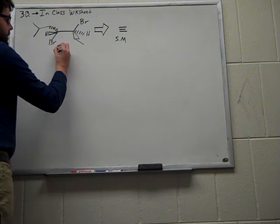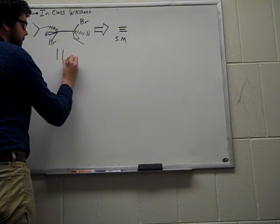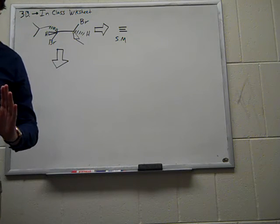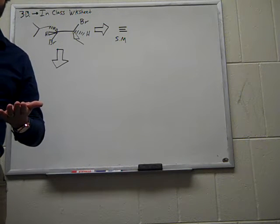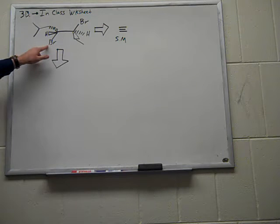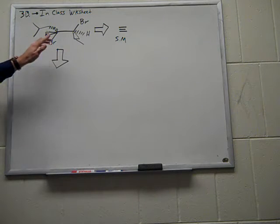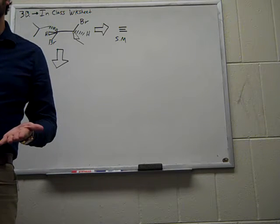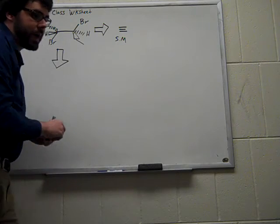So the first step in our retrosynthetic analysis is to start with our product, our dibromine species shown here. And I've drawn this in a slightly different way than we've shown in your packet just to highlight the fact that we are indeed doing an anti-addition of bromine here. So the first thing I want you guys to be able to recognize is that there are bonds here that we know how to make, specifically the carbon-bromine bonds. And I'll highlight them in red.